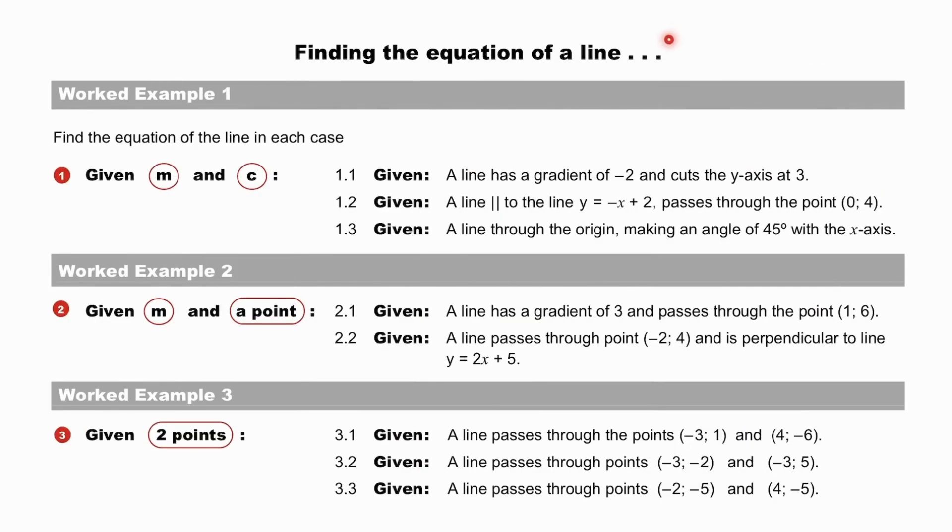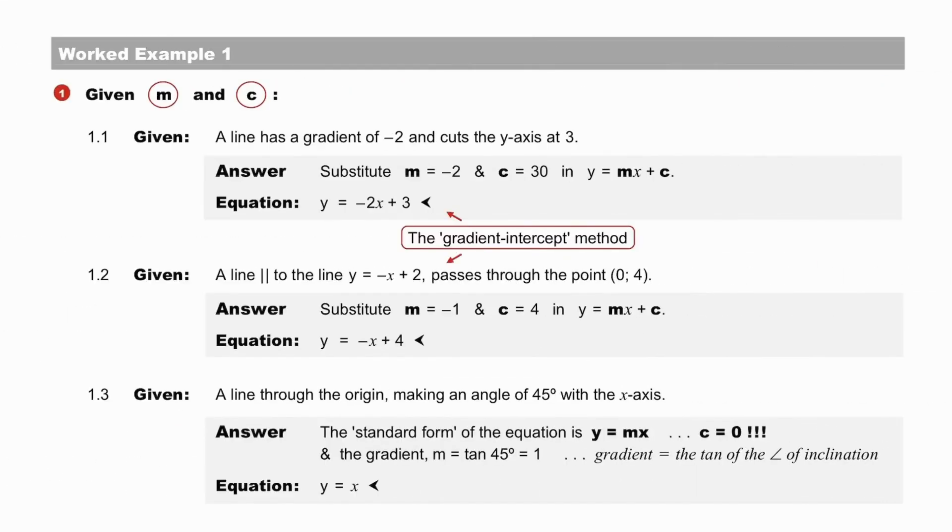Finding the equation of a line. There are three possible situations. Given m and c. Given m at a point. Or given two points. Pause to work through these examples, but remember to watch out for the three cases of lines and to apply what you've learned. Pause to check example 1, especially question 1.3. Did you recognize, case 2, that a line through the origin has a standard form, y equals mx, and that you only needed to find the value of m, which was the tan of the angle of inclination of that line. The tan of 45 degrees is 1, so the equation was y equal to x. Maybe you'd like to pause to absorb once more.